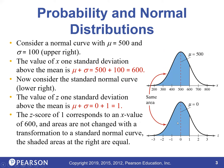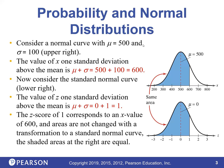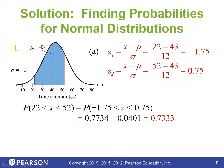On the calculator, go to second distribution, Normal CDF, number two. The lower bound is negative 0.5, and the upper bound is a large number like 1000 to capture everything to the right. Mean is zero, standard deviation is one. The area is 0.6915.